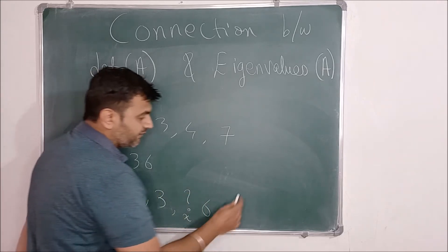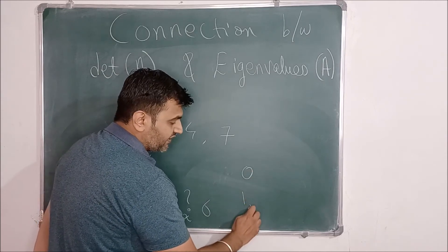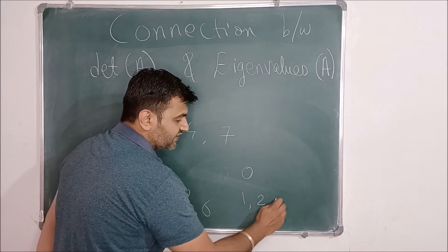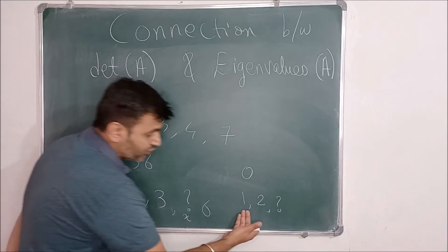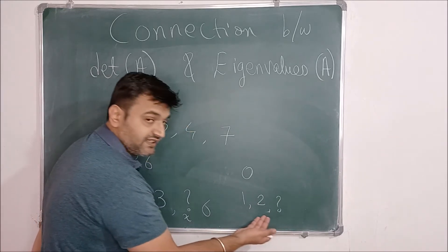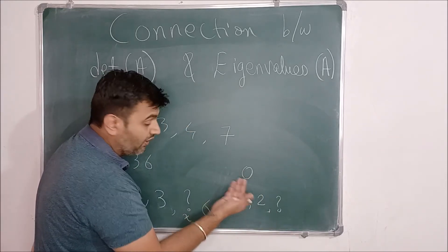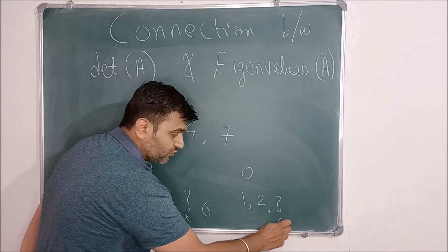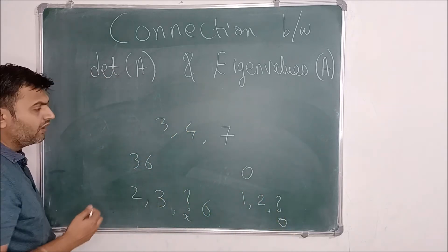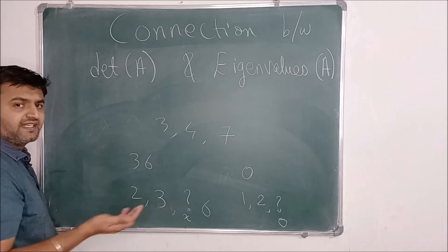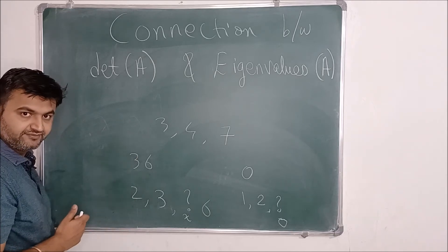Suppose the determinant is 0 and two of the eigenvalues are 1 and 2 — what is the third eigenvalue? We know the product of eigenvalues equals the determinant, and the determinant is 0, therefore the third eigenvalue has to be 0. Such questions can be easily answered with the help of this result.